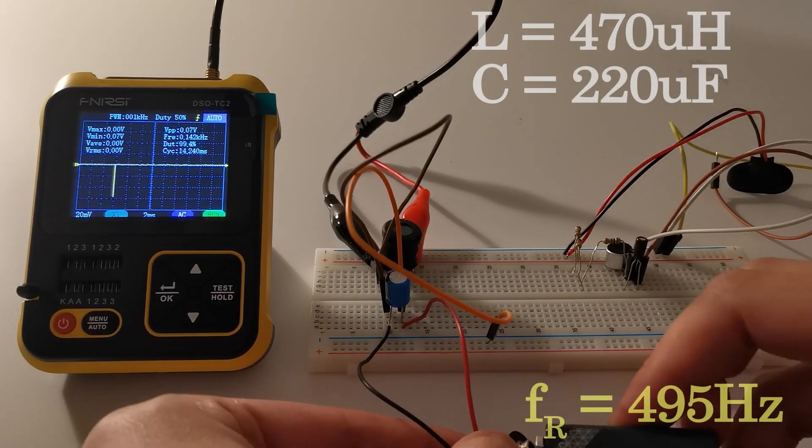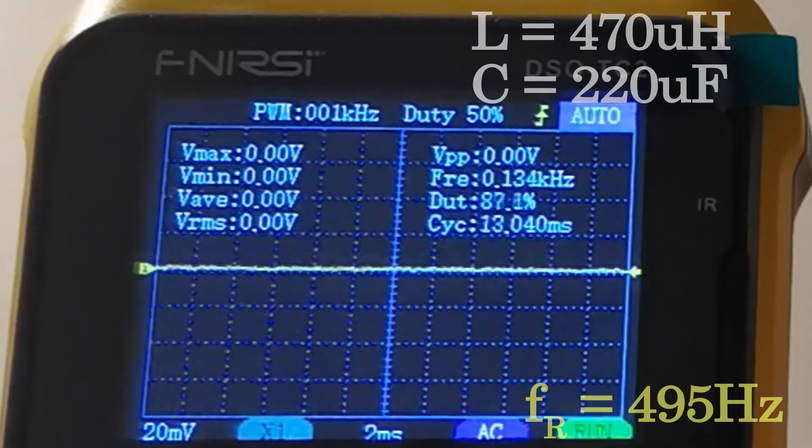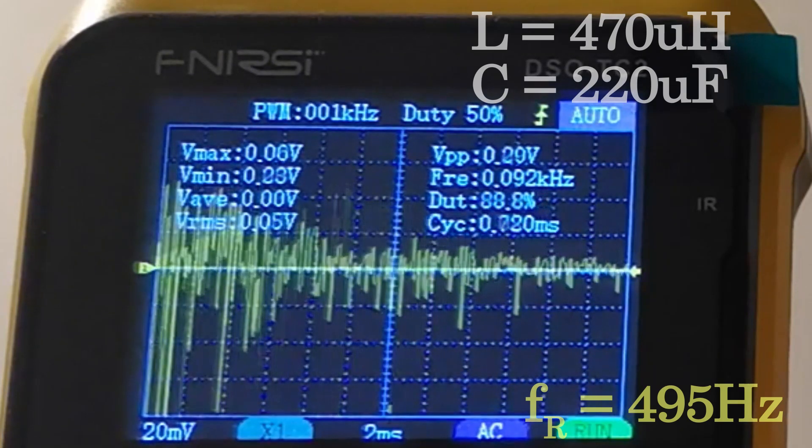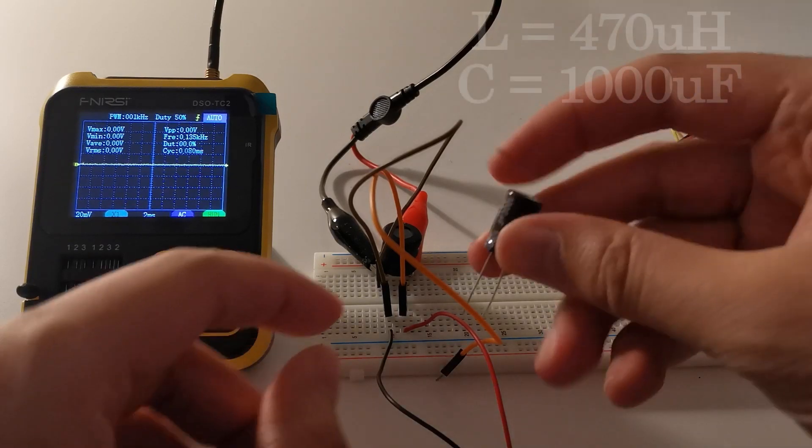Now we can replace with 220 microfarads so we expect that the period will be larger. Charging the capacitor now, dumping... You see, much clearer now.